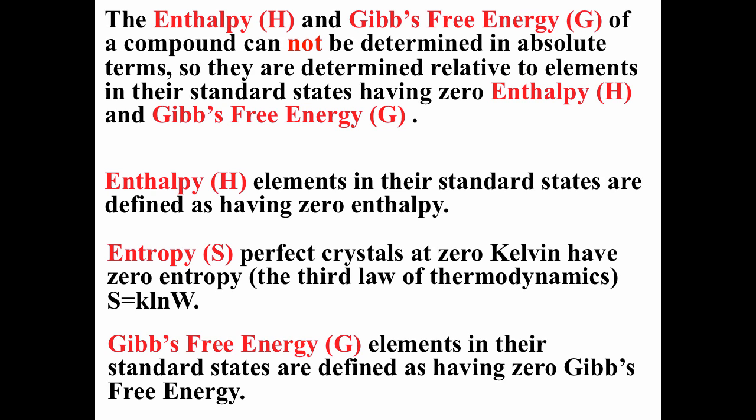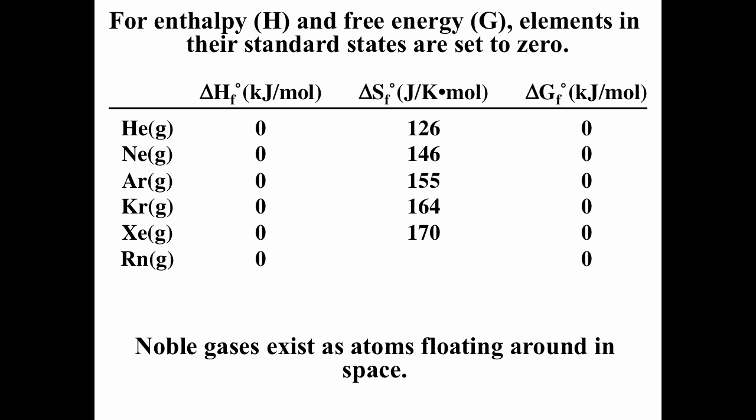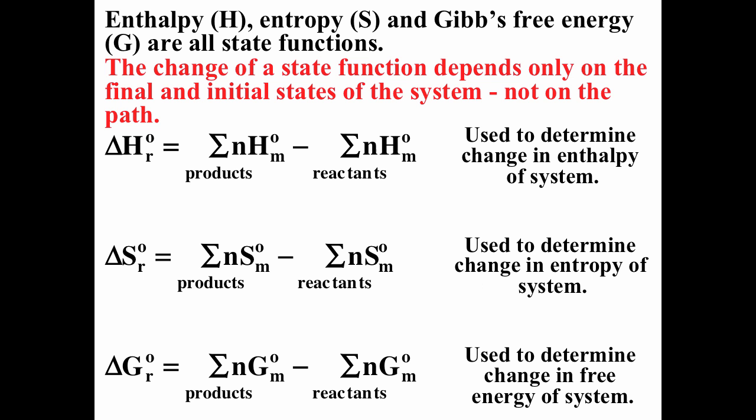Entropy, however, we can actually determine in absolute terms using S equals k times the natural log of W. A perfect crystal at zero Kelvin has only one configuration and therefore has zero entropy. For Gibbs free energy and enthalpy, values are zero for elements in their standard state, but entropy is not zero. For gases, liquids, solids, and noble gases — elements in their standard state — there is zero enthalpy of formation and zero Gibbs free energy of formation, but non-zero entropy values. For metals, which are solids in their standard state, there is also zero enthalpy of formation and zero Gibbs free energy of formation, but non-zero entropy values.